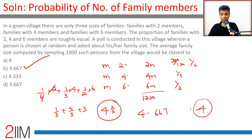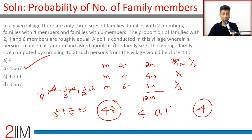The answer is approximately 4.667 — a wonderful and delightful question. The easy answer of four just pops out, but you must be careful. We are told there are equal numbers of families with two, four, and six members — not equal numbers of people from each family size. So be switched on about that distinction.